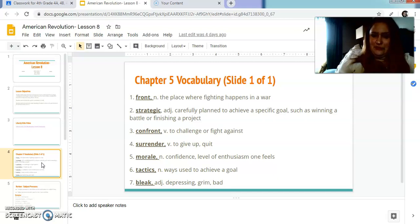This is the chapter 5 vocabulary. There's only one slide of vocabulary today. So the first word is front. It's the place where fighting happens in a war. Strategic means carefully plan to achieve a specific goal, such as winning a battle or finishing a project. So if you're strategic, you plan something out and you're really clever about how you did it. Confronts means to challenge or fight against. Surrender means to give up or quit.